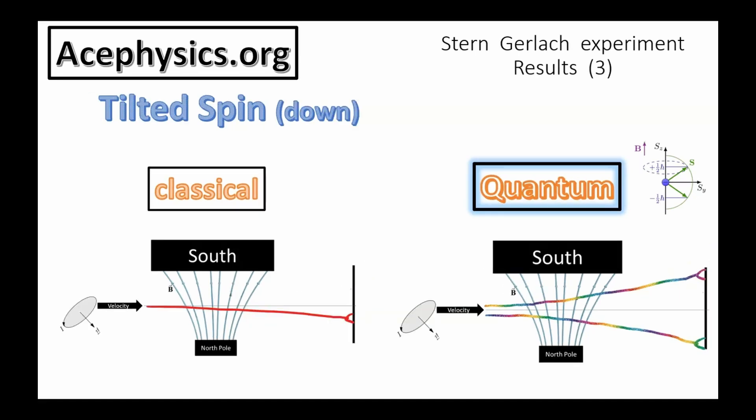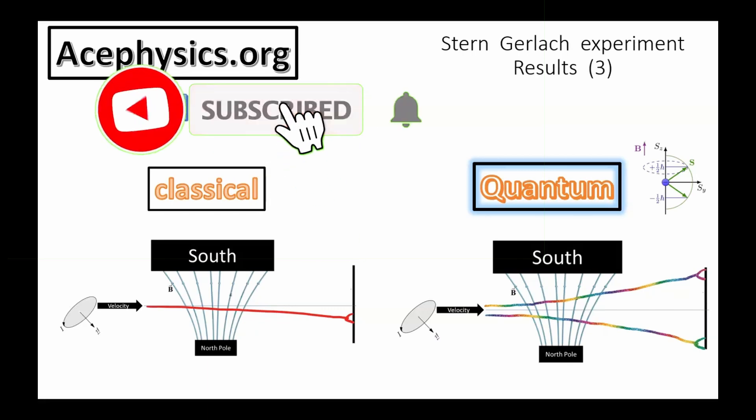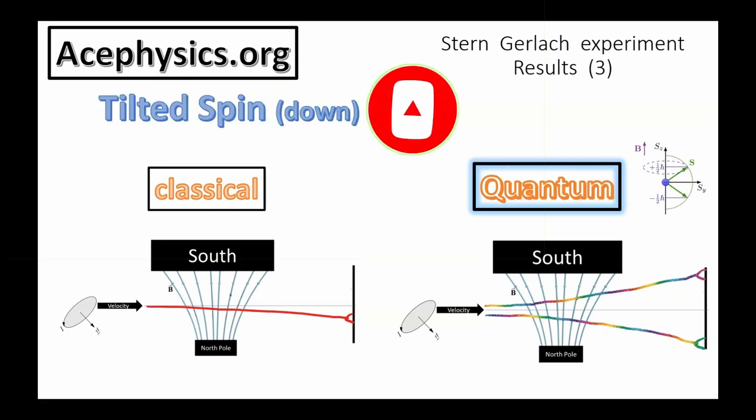The next scenario mirrors the previous one but with a magnetic moment tilted downward instead of upward. Classically, you would expect the particle to be detected just above the bottom of the screen due to the combined torque and force acting on it. However, the experimental results tell us a different story. Quantum mechanically, the particle is detected with a certain probability at the top of the screen and with another probability at the very bottom. The outcome reflects the fact that the particle is in a linear superposition of both spin-up and spin-down states. In this case, there is a higher probability of the spin being measured at the bottom of the screen.